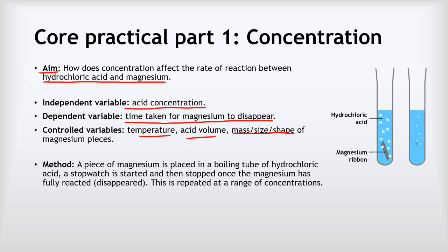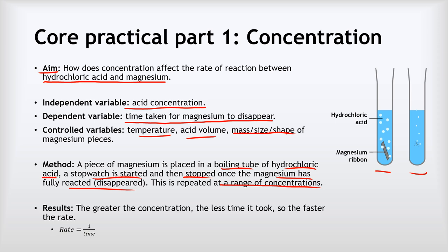Our method was really simple: we placed a piece of magnesium in a boiling tube of hydrochloric acid, started the stopwatch, and stopped it once the magnesium had fully reacted and disappeared. We then repeated that at a range of different concentrations. What we found was that the greater the concentration, the less time it took — so the faster the rate. We calculated the rate as 1 divided by the time it took for the magnesium to disappear.